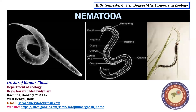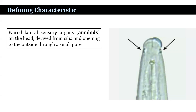What are the characteristic features of nematodes? They have paired lateral sensory organs called amphids, located on the head region. These are derived from cilia and open to the outside through a small pore.